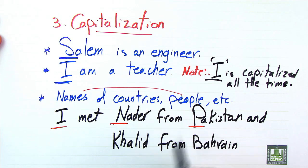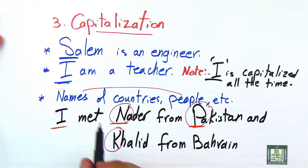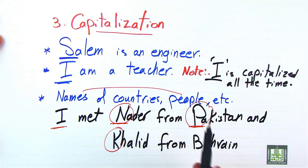Pakistan is also a name of a country, so it is capitalized. Khalid again is a proper noun because it's a name of a person, and Bahrain is a name of a country.